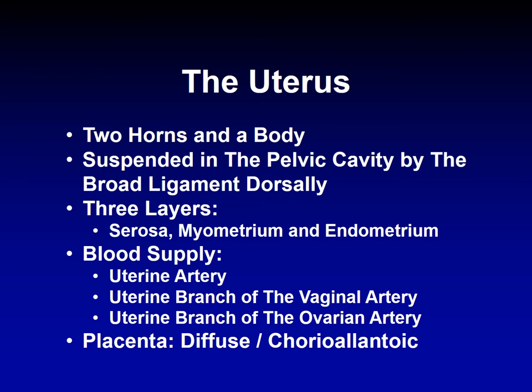The uterus has two horns and a body, and is suspended in the pelvic cavity by the broad ligament dorsally. It has three layers: serosa, myometrium, and endometrium. The blood supply comes from the uterine artery, the uterine branch of the vaginal artery, and the uterine branch of the ovarian artery. We must be concerned about the uterine blood supply because in cases of dystocia, uterine prolapse, or ruptures, these vessels are large and can cause death.